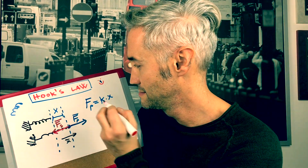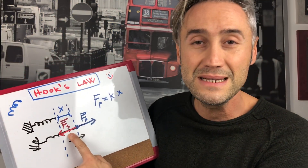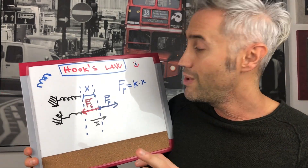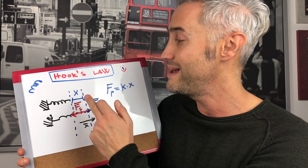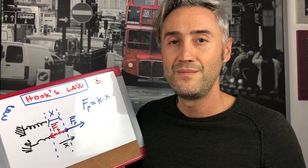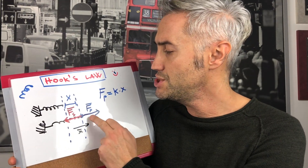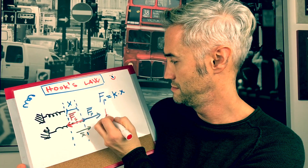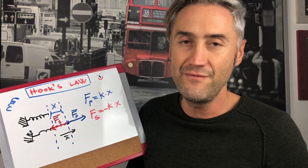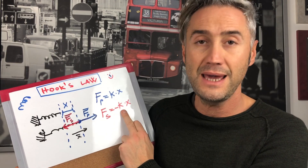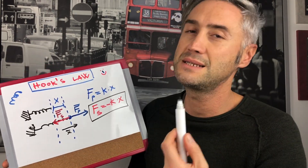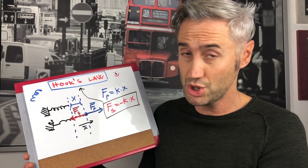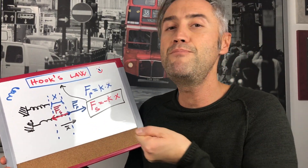Let's draw this force. That force is known as the restoring force, which we call F_S. As you can see, that force is in the opposite direction of X, which means it is negative. We can also notice that these two forces are equal in magnitude but opposite in direction, so we can write F_S equals minus K times X.